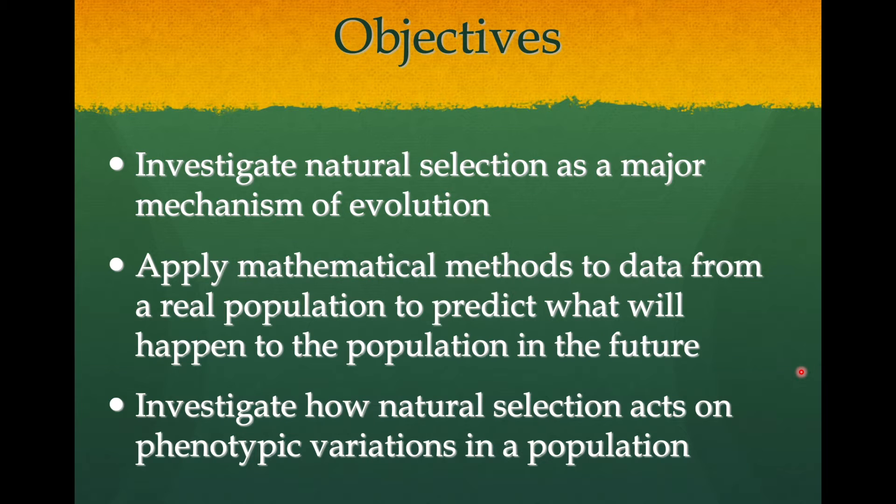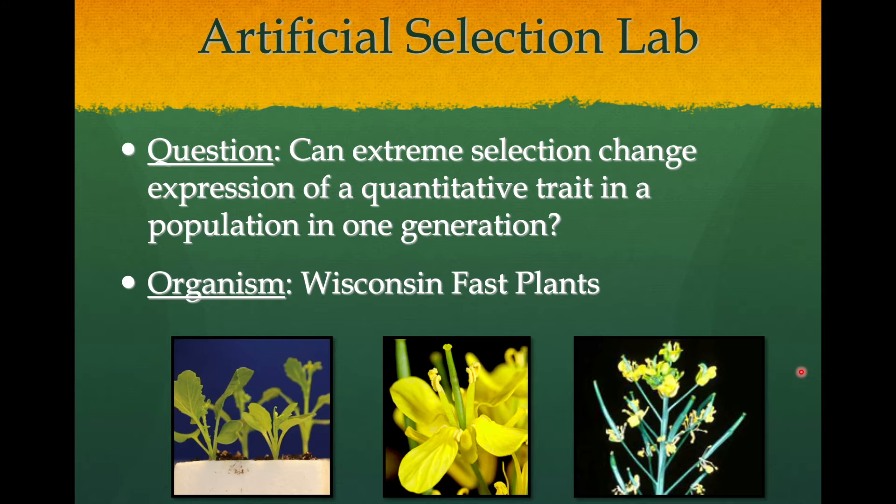For this lab we were taking a look at natural selection as a mechanism of evolution. We applied mathematical methods to data from this real population to investigate how natural selection acts on phenotypic variations in a population. Our main question was: can extreme selection change expression of a quantitative trait in a population in one generation?